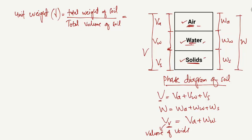So the unit weight formula is: γ = W / V, where W is the total weight of soil and V is the total volume of soil. This is the first formula. The second one is the dry unit weight, represented by gamma dry (γ_dry).